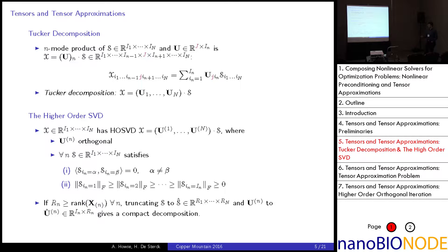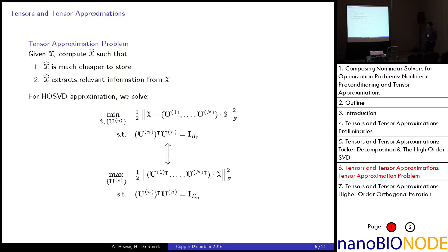We're also able to truncate this a bit and give a compact higher order SVD. So, if capital R sub n is greater than or equal to the corresponding component of the multilinear rank, truncating S to S hat, where it's in R1 through Rn, and the matrix U n to the first R n columns of U n, this gives a compact representation.